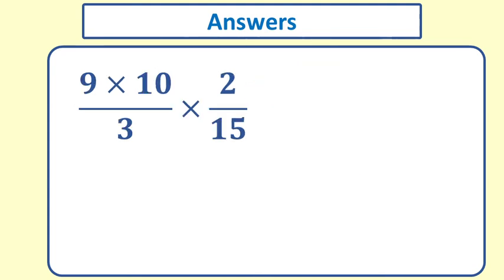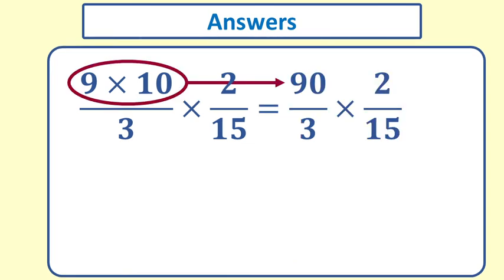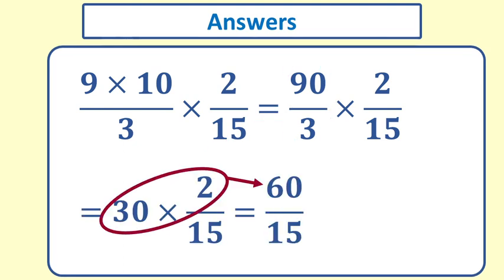The answer to the next exercise is 4. You can see that first we multiply the 9 times the 10 then divide by 3 multiply by 2 then divide by 15.